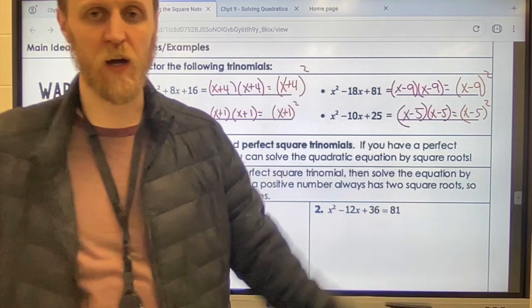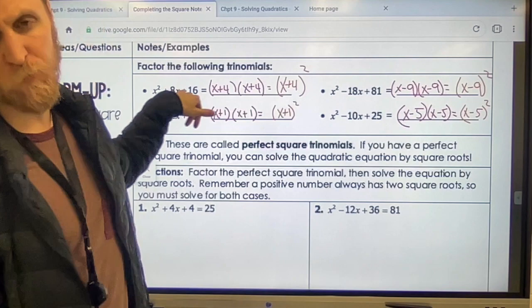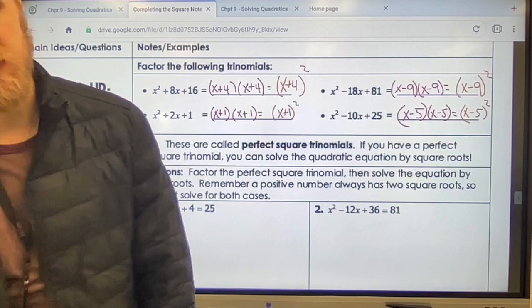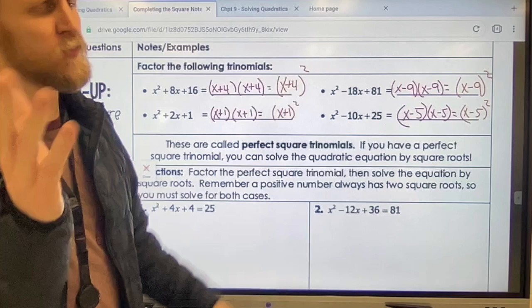Ideally you've already done the warm-up part, and if not here it is. On the warm-up part of your sheet it asks you to factor these four trinomials. When you did, hopefully you noticed that there was a common theme. For example, on the first one, what multiplies to be 16 and adds to be 8? Well, 4 and 4—it's the same number, they're both plus 4s. And then the one below it, what multiplies to be 1 and adds to be 2? Well, 1 and 1. So for all of these, what you should have noticed is that they were the same thing multiplied together.